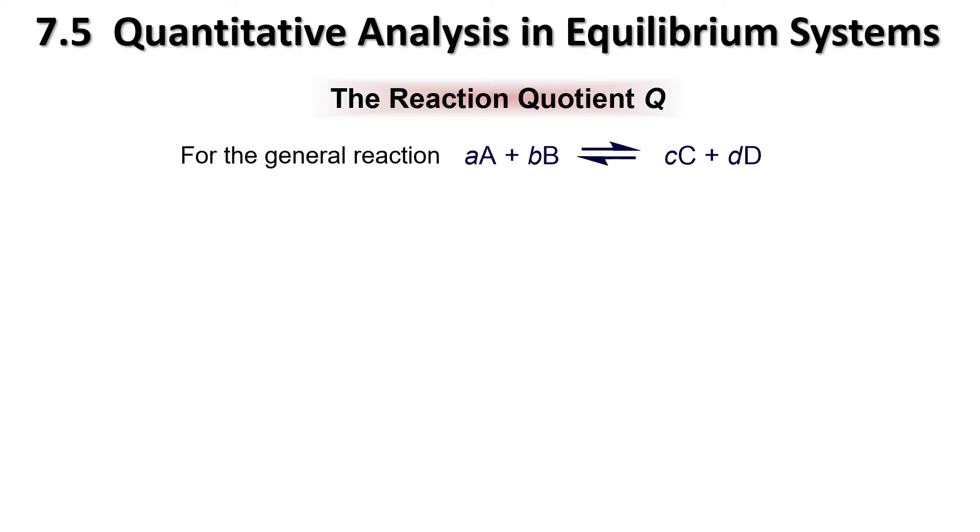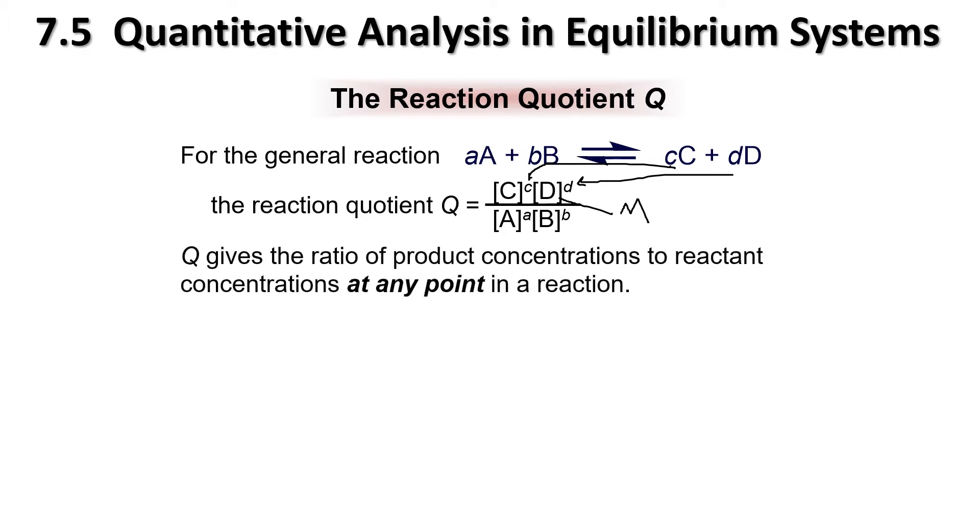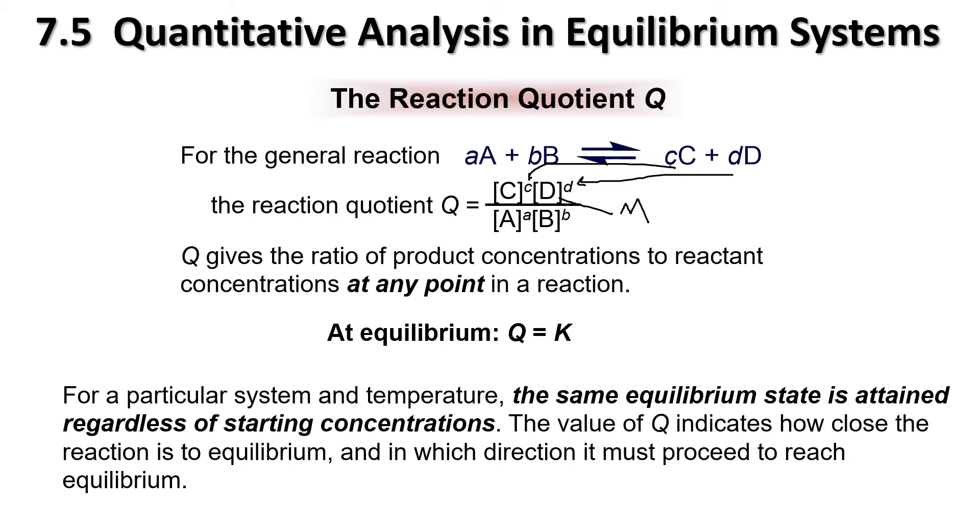So the reaction quotient Q, when we have a general equation, it's going to relate to our quotient Q like so. You can see how we have our coefficient is going to act as our exponent for each of these, and we do need to have a concentration. So these units here are going to be in big M or moles per liter. So sometimes for a question, you might have to put it into moles per liter first and then proceed. Q gives the amount of any product concentration to reacting concentration at any point in a reaction, and when we're actually at equilibrium, our Q value and our K value are equal to each other. So for a particular system and temperature, the same equilibrium state is attained regardless of starting concentrations. The value of Q indicates how close the reaction is to equilibrium and in which direction it must proceed to reach equilibrium.